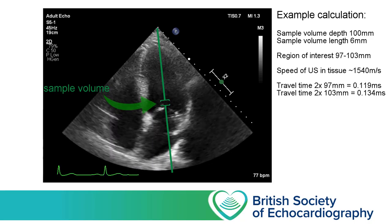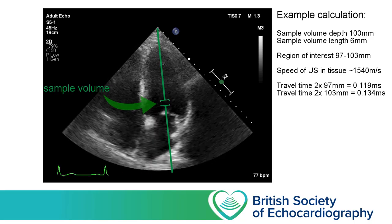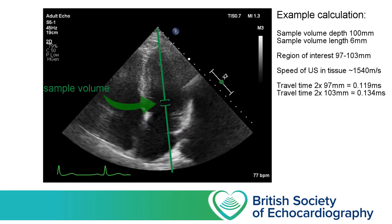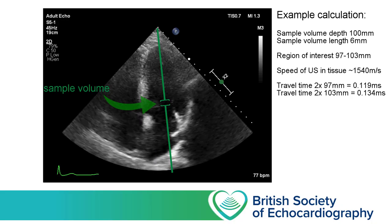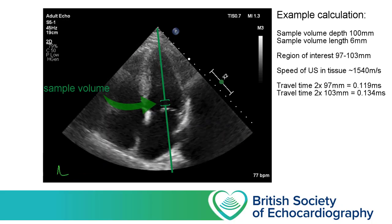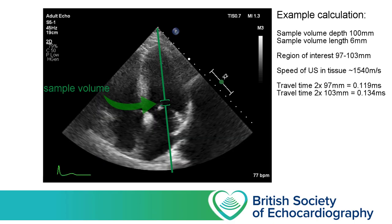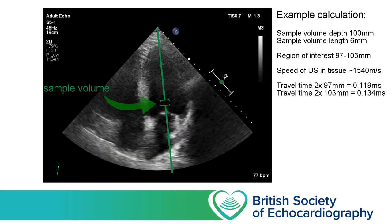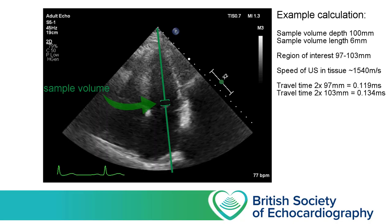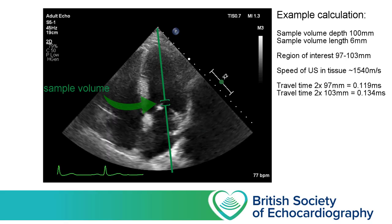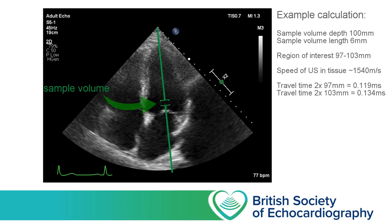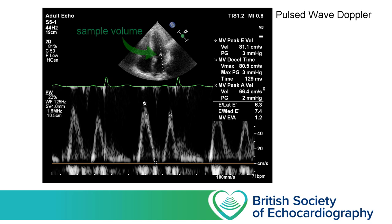The ultrasound software knows that if it sends out a pulse of ultrasound and it returns before 119 microseconds, then it won't have had time to reach the sample volume and return. Likewise, any signal returning later than 134 microseconds would have been reflected from a structure deeper than the sample volume. It knows to ignore all information returning outside of that gate, and only use information that arrives between 119 and 134 microseconds after the pulse was emitted. By sending several thousand pulses along this single scan line each second, the software is able to measure the shift in phase between transmitted and received waves, and then use the Doppler equation to calculate velocity.